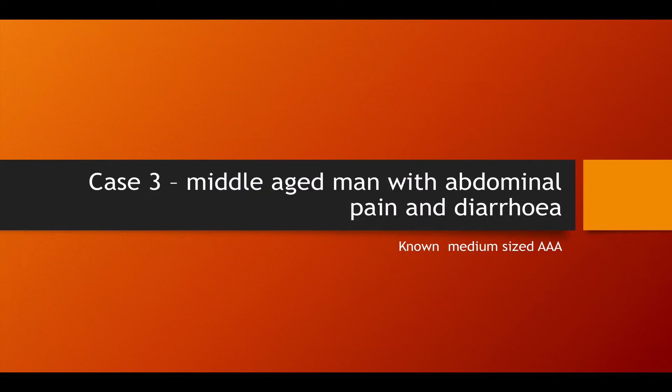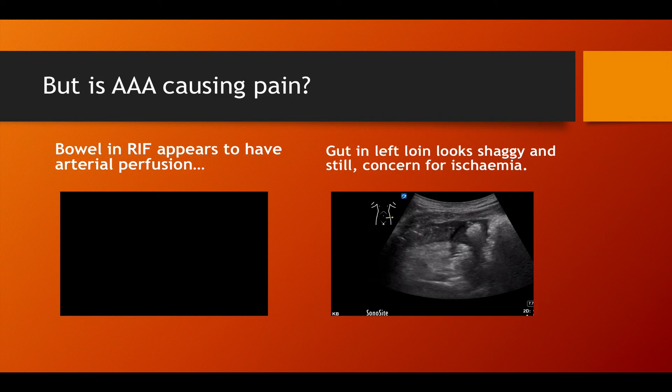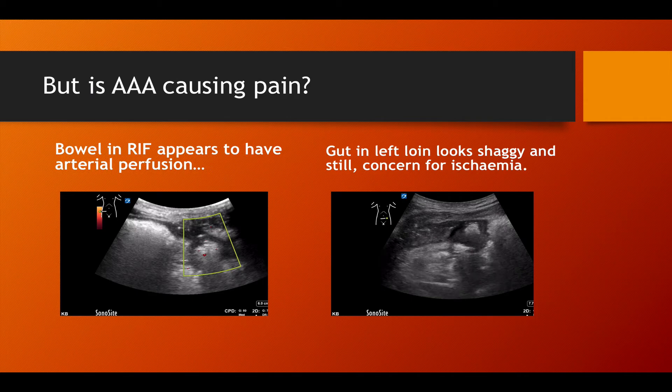Case 3 is a middle-aged patient with abdominal pain and diarrhea. There's a known medium-sized AAA, and when we put the probe on it's obvious. Note that the pictogram option on some ultrasound machines can be a really good way of giving a quick indication of probe position. But the question is: is the AAA actually what's causing the pain? In my experience I have missed a gut obstruction and a hernia simply because I was distracted by a really nice AAA.